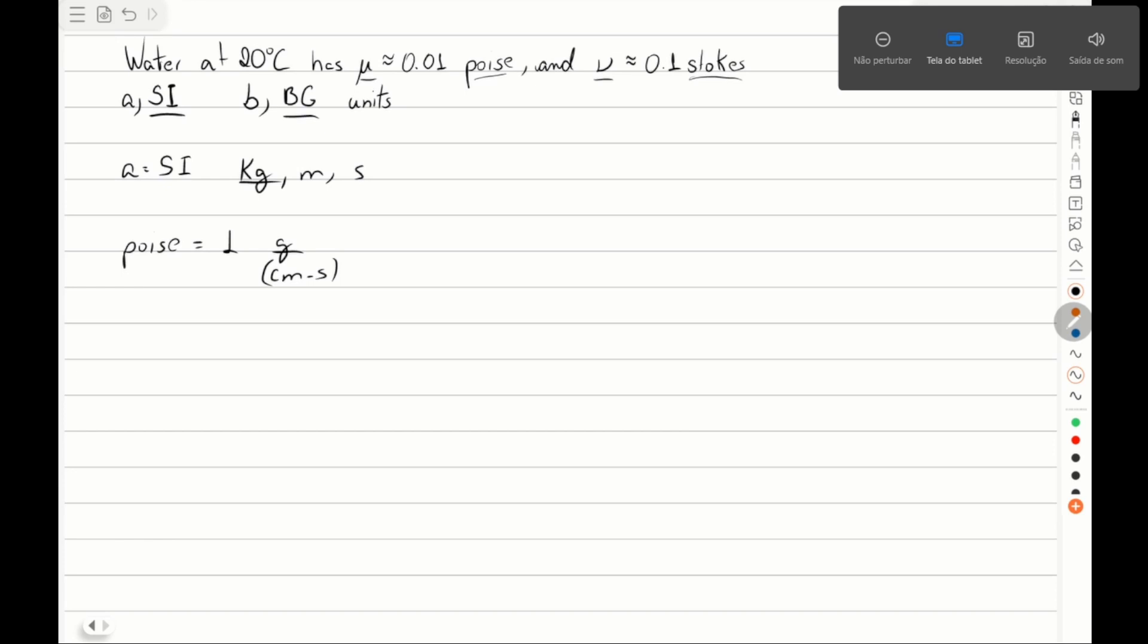This is the unit of Poise. And a Stoke is equal to one centimeter squared per second. What we need to do is change these units to the International System and later to the British system.